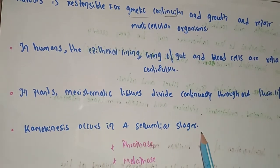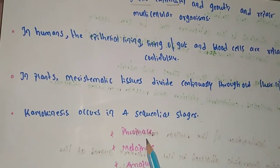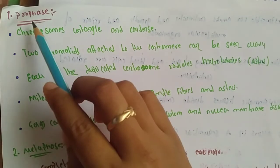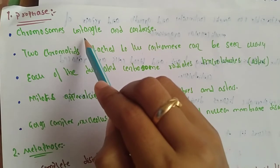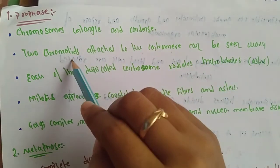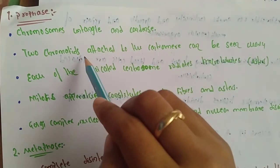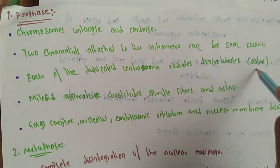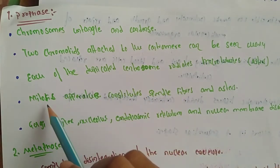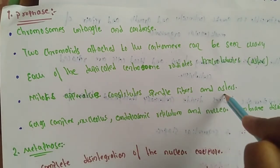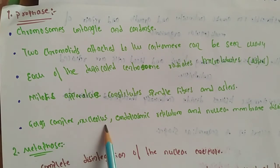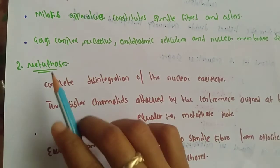Mitosis occurs in four sequential stages: prophase, metaphase, anaphase, and telophase, followed by cytokinesis. In prophase, chromosomes condense and two chromatids attached to the centromere become visible. Each duplicated centrosome radiates microtubules called asters — star-shaped structures. Spindle fibers and asters together form the mitotic apparatus. The Golgi complex, nucleolus, endoplasmic reticulum, and nuclear membrane disappear.